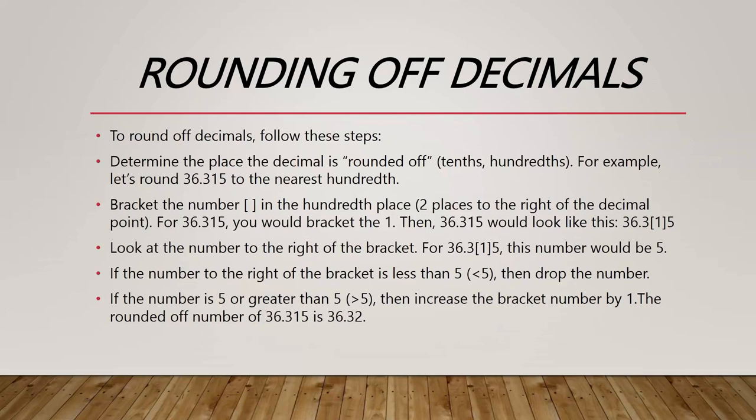This case follows the second rule, so the rounded number of 36.315 is 36.32. That's how we round decimals.